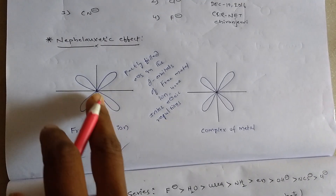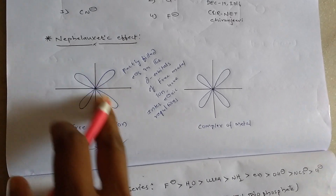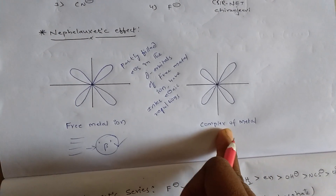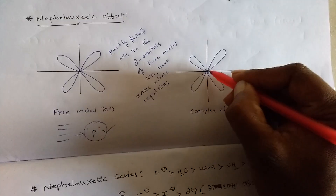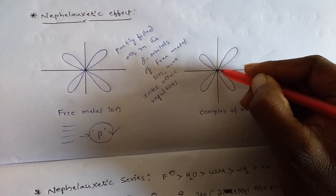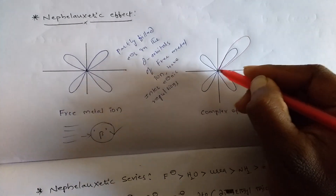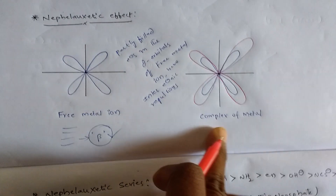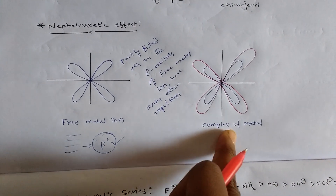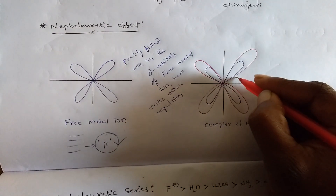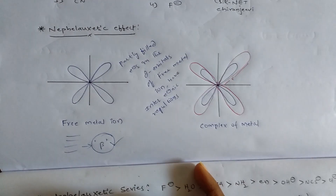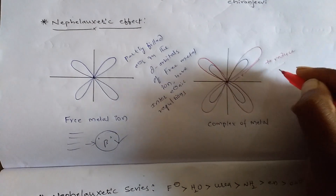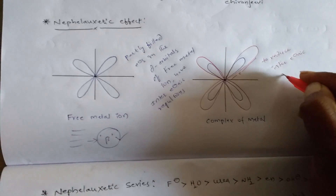To reduce inter-electronic repulsions in the lobes of the d-orbitals of the free metal ion, when the free metal ion is complexed with ligands, the lobes of the metal's d-orbitals in the complex increase in their size. That means the radius of the lobes increases in the metal complexes.